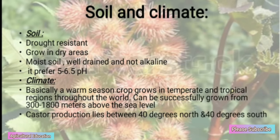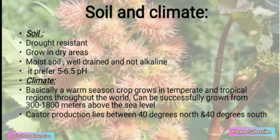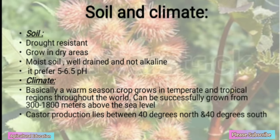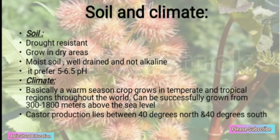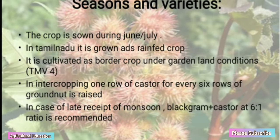Soil and Climate — Soil: Drought resistant, grows in dry areas with moist, well-drained and not alkaline soil. It prefers a pH range of 5-6. Climate: Basically a warm season crop, grown in temperate and tropical regions throughout the world. Can be successfully grown from 300-1800 meters above sea level. Castor production lies between 40 degrees north to 40 degrees south.